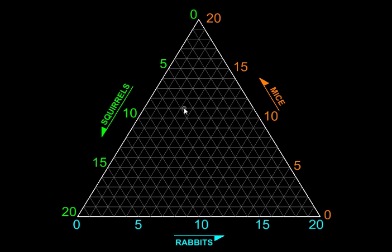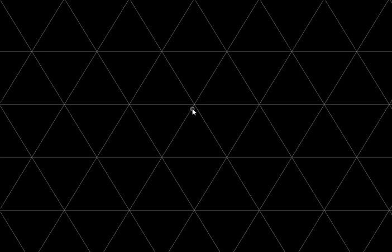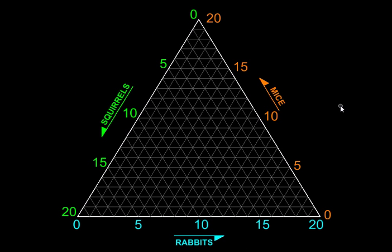Everywhere the three lines meet, or the three grid lines meet, would be a valid population mix. By valid I mean where integer number of each pet exist and they add up to 20 as well.